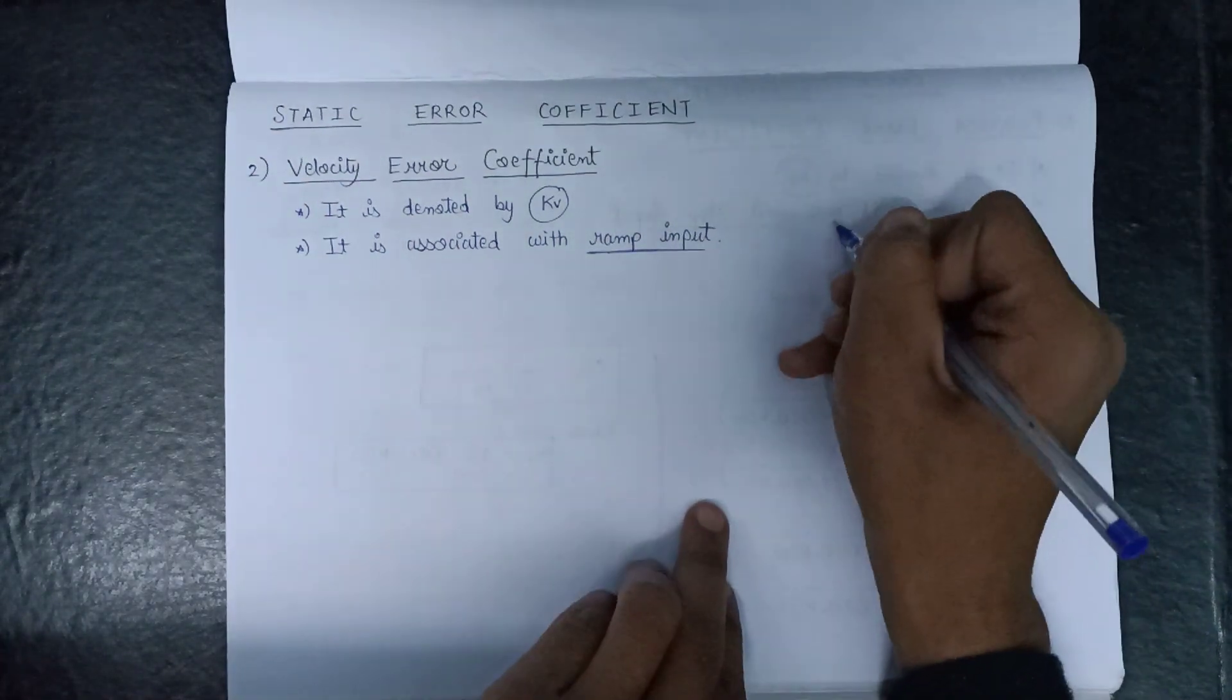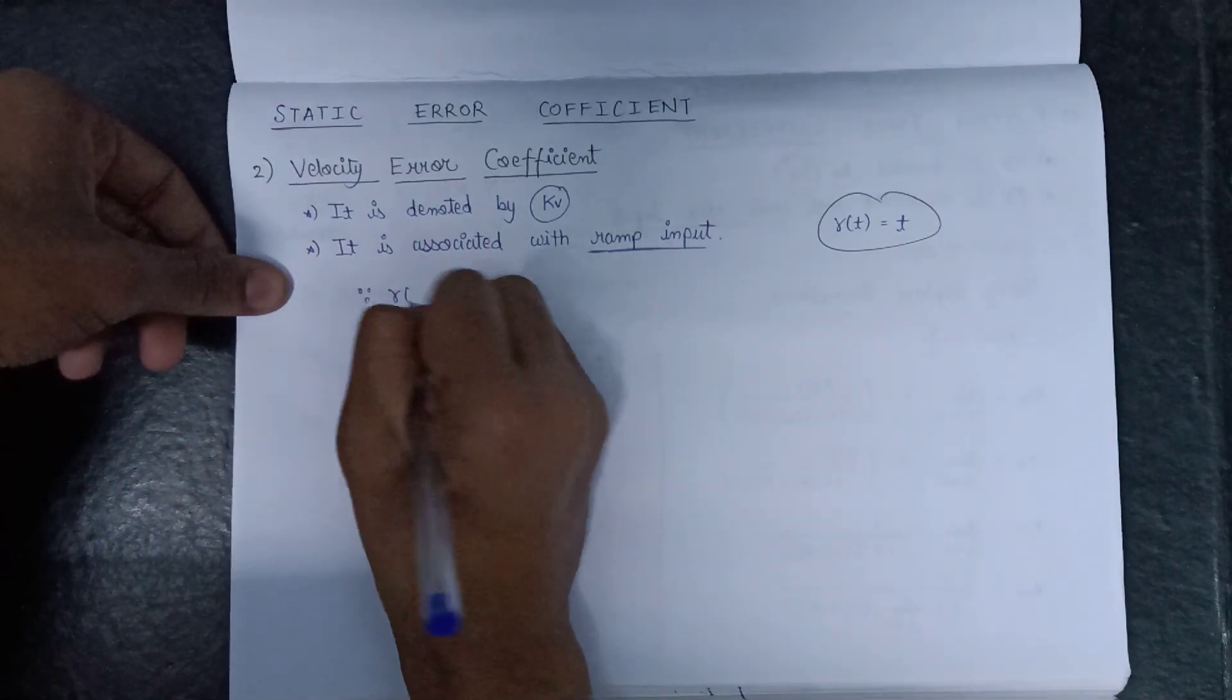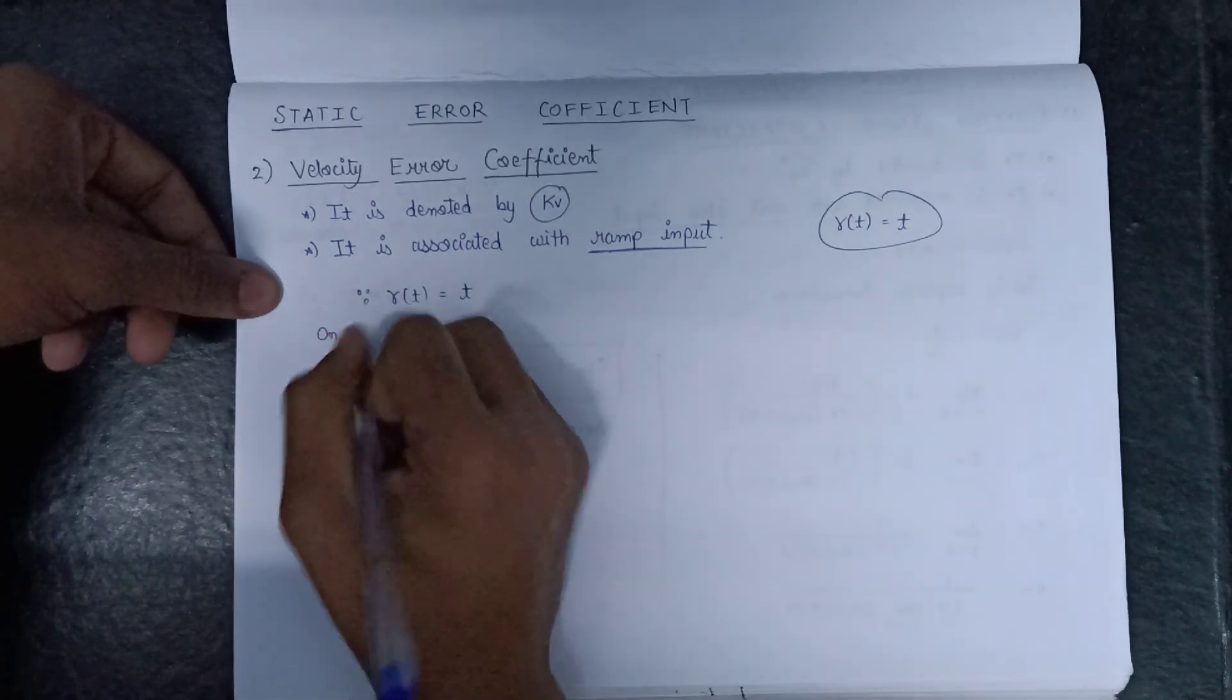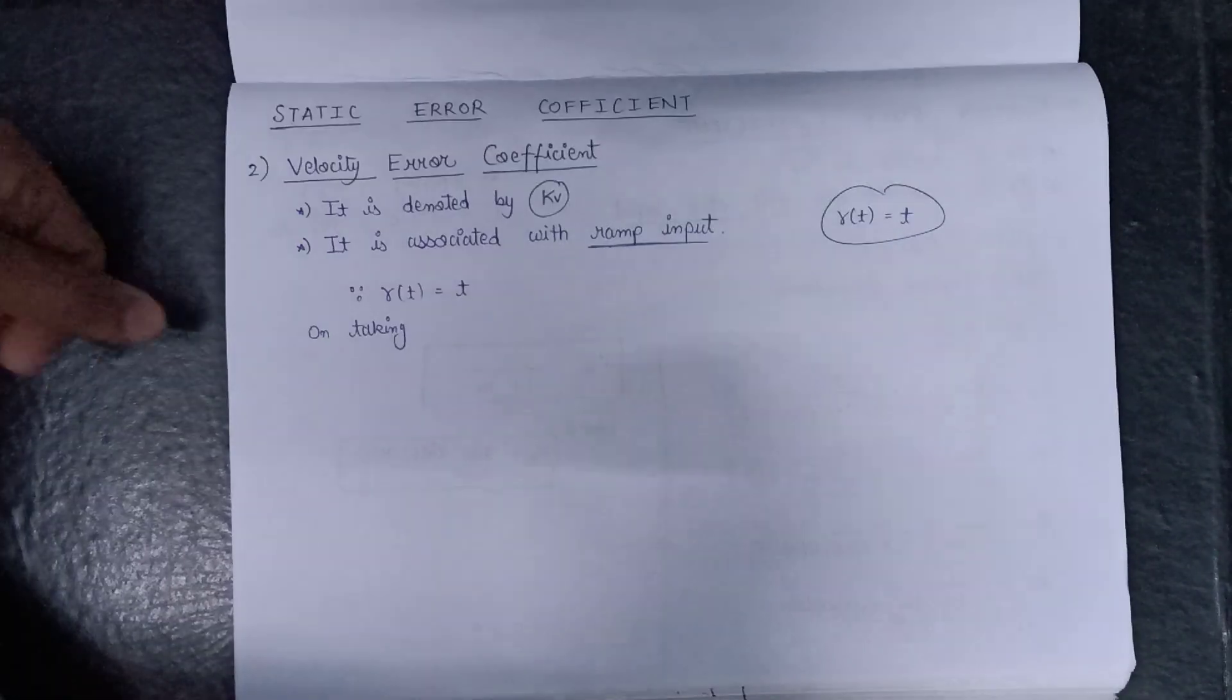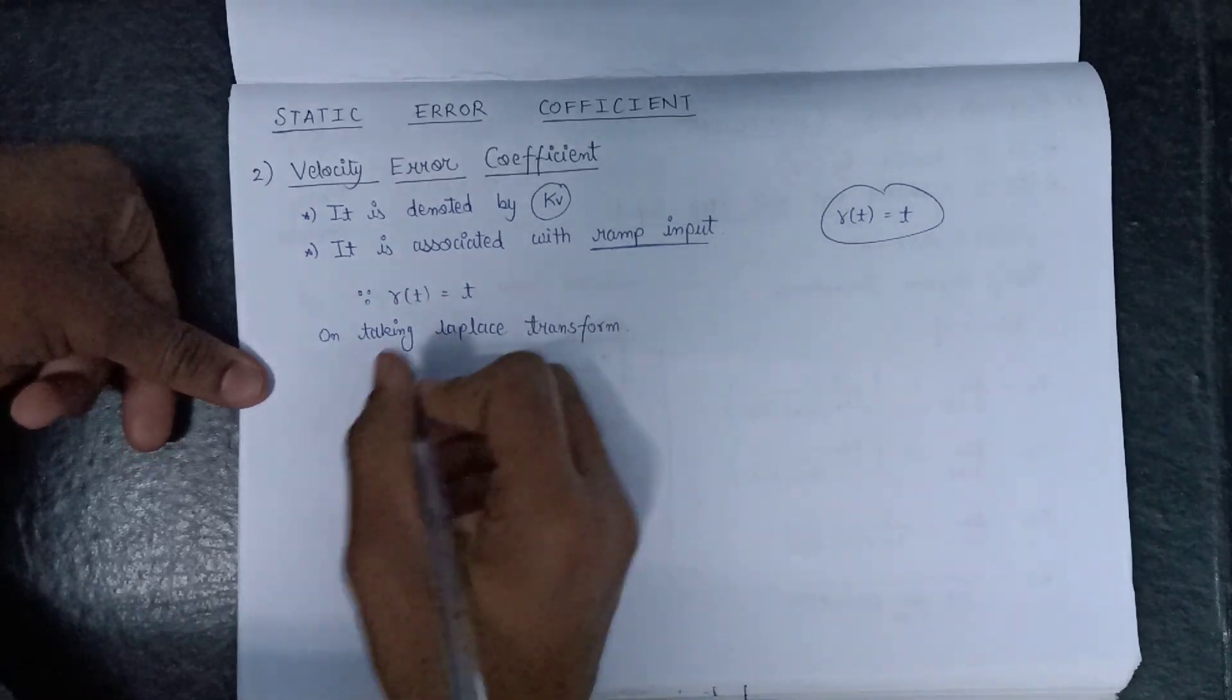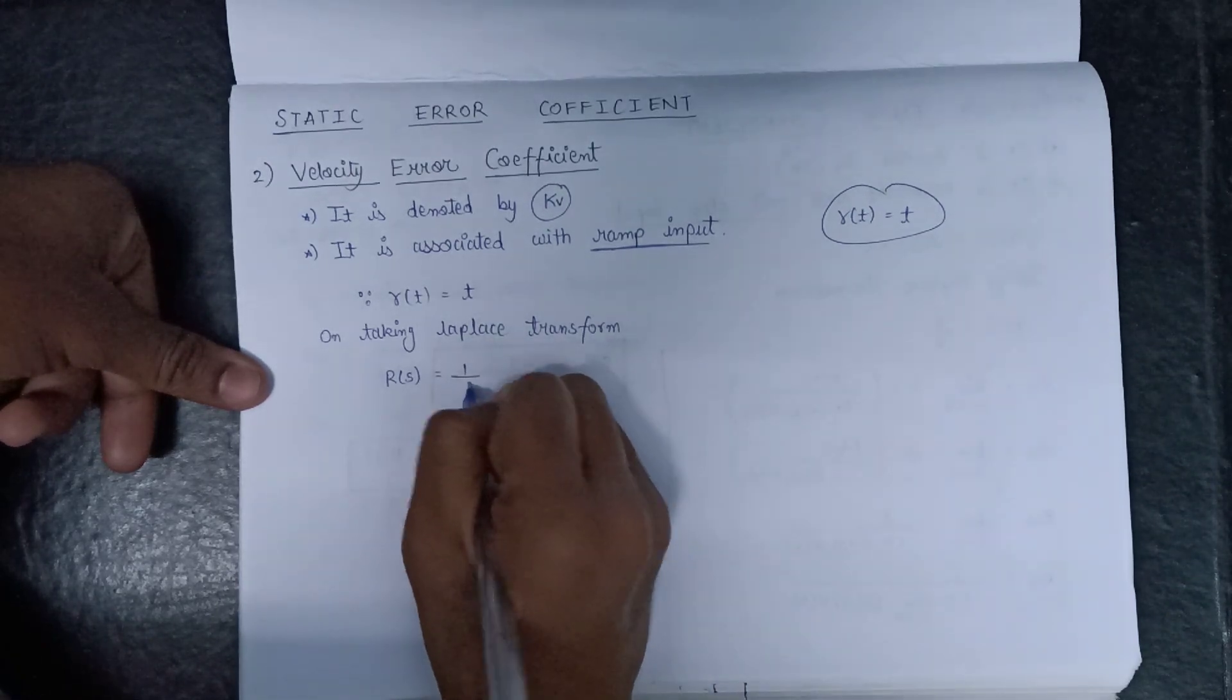So here the input R will be equal to t only. Since R is equal to t because we are applying the ramp input here, on taking Laplace transform we get this R(t) will become R(s). And Laplace transform of t will be equal to 1 over s square.